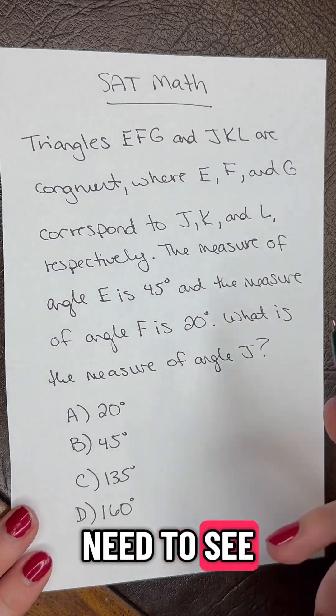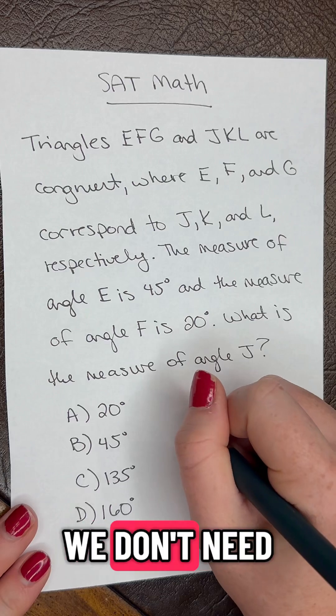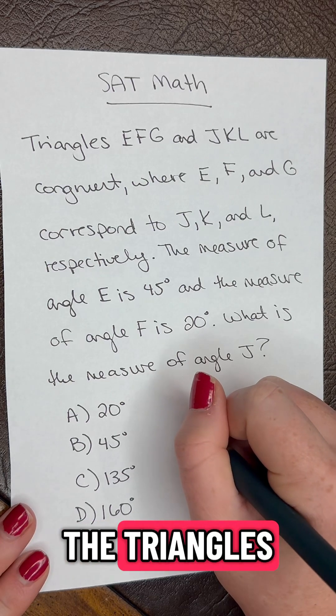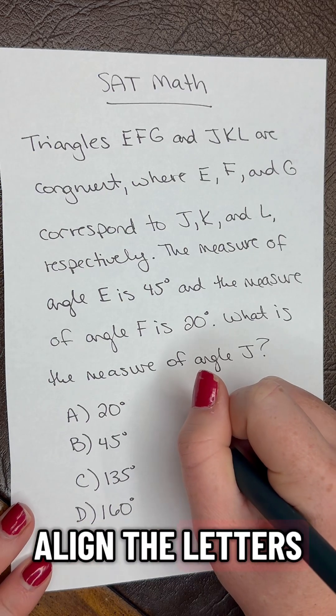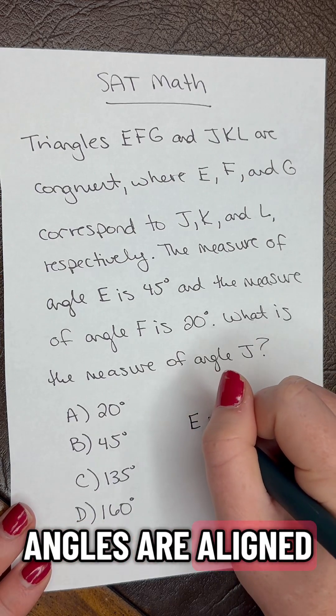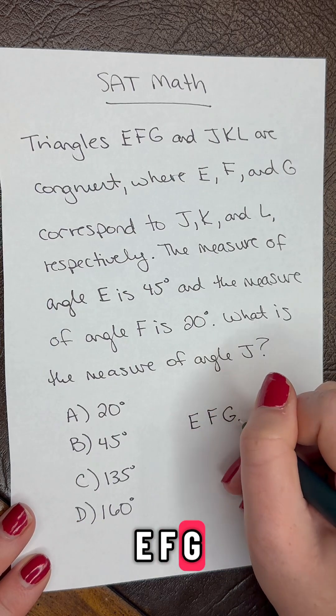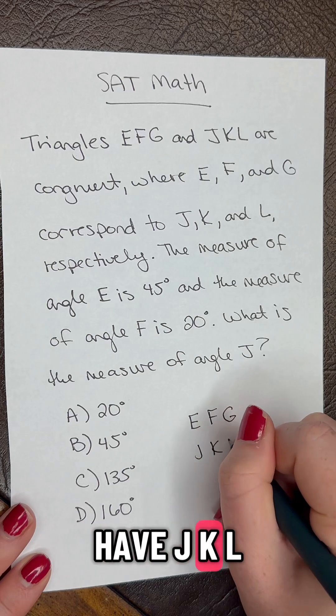So we just need to see how these triangles line up. We don't need to necessarily draw the triangles, but let's just make sure we align the letters so that the angles are aligned. So we have E, F, G, and then we have J, K, L.